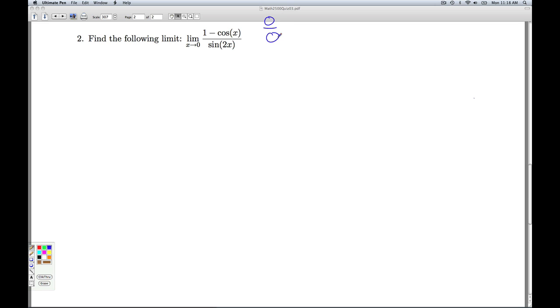So I have an indeterminate form. When you get a 0 over 0, there's a good chance you can do some sort of manipulation to simplify what's going on. And in that case, you may actually get the limit to work out.